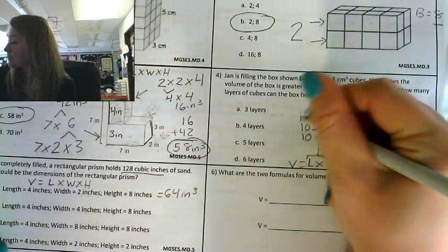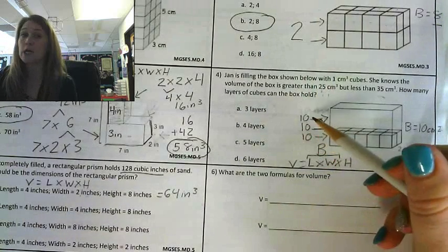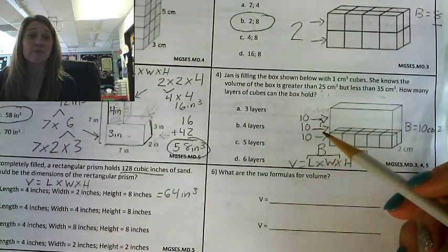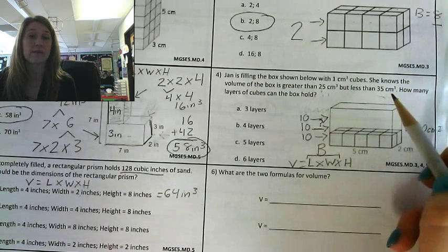Let's add another layer. Another layer of 10. That gives me 10, 20, 30. Now I have a volume of 30 cubic centimeters. Well, 30 is between 25 and 35.